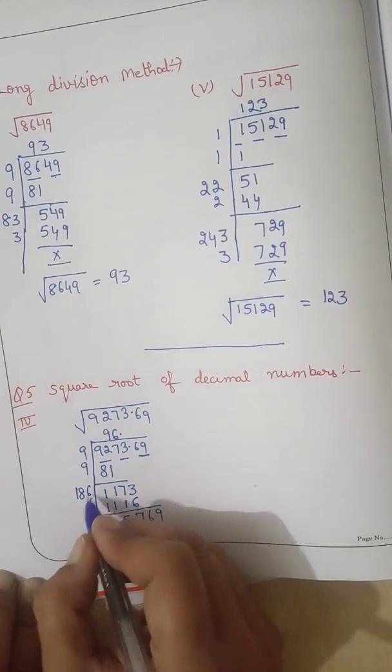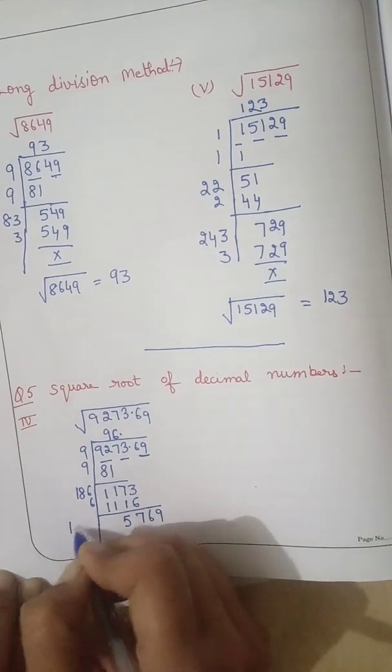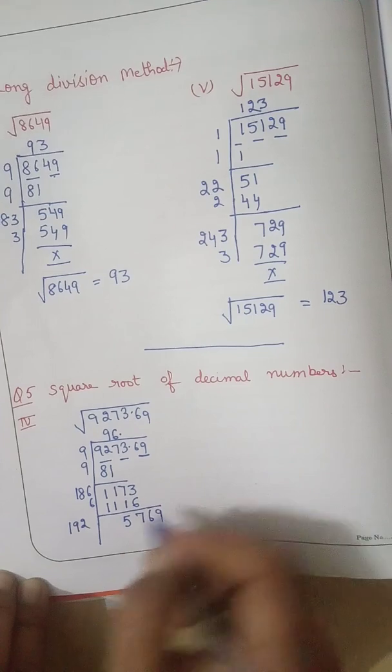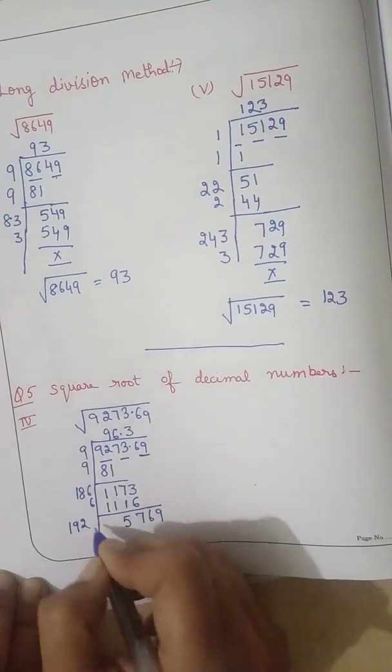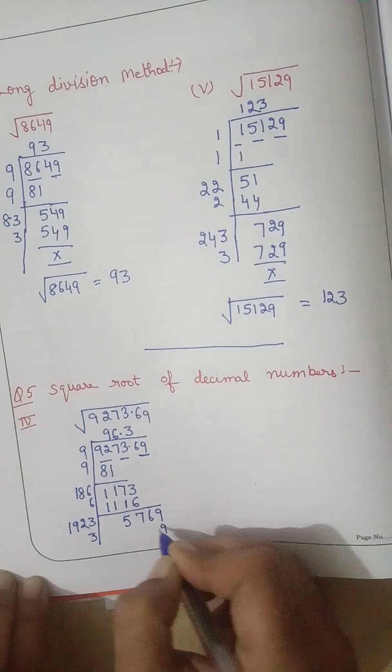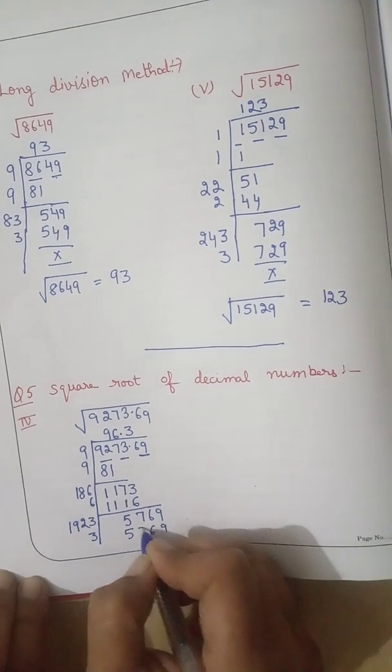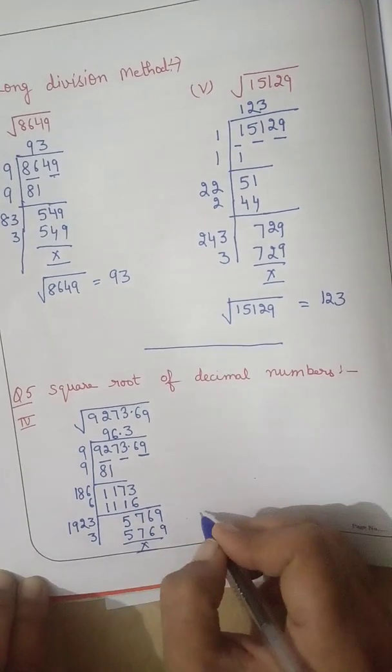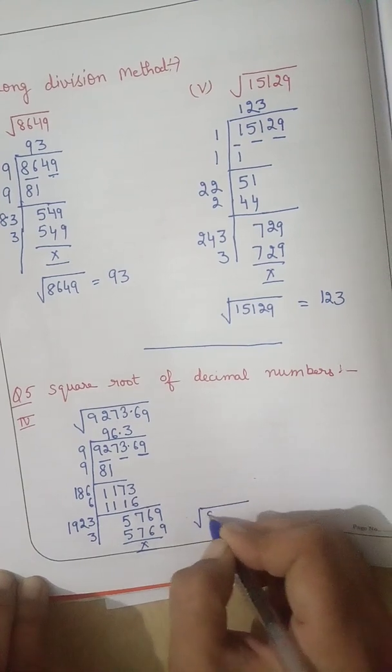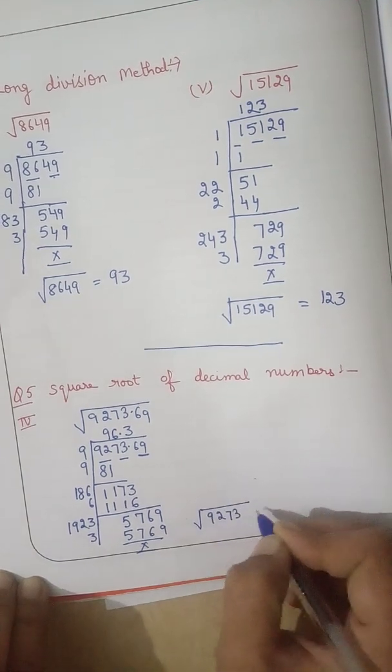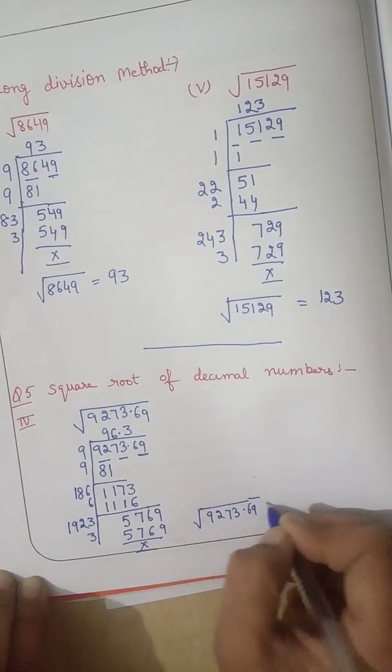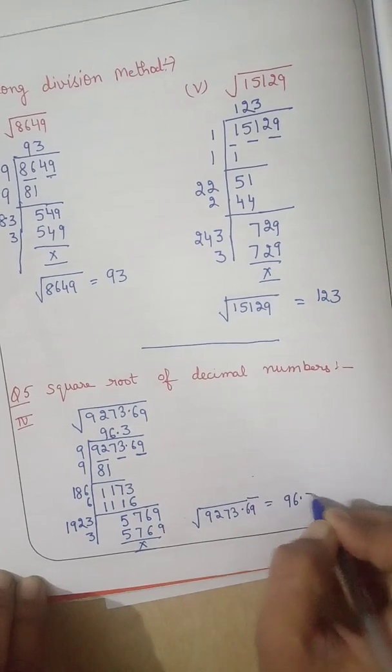Now the next pair. 186 plus 6 is 192. Now it is divisible by 3. 3 times 3 is 9, 3 times 2 is 6, 19 times 3 is 57. Square root of 92.7369 is 96.3.